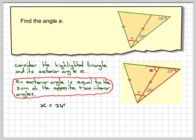So X will be equal to 24 plus 33, which is 57 degrees.